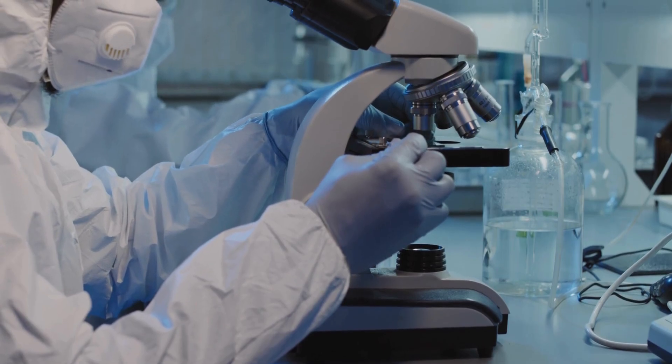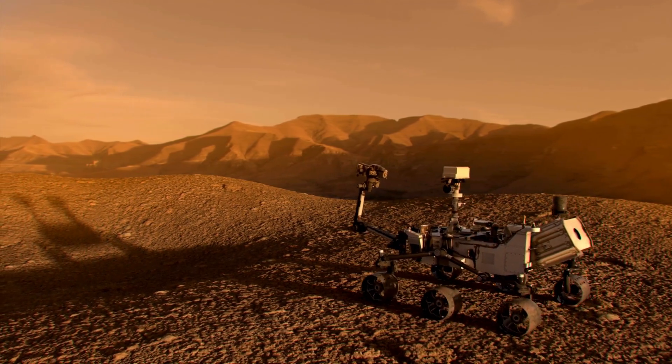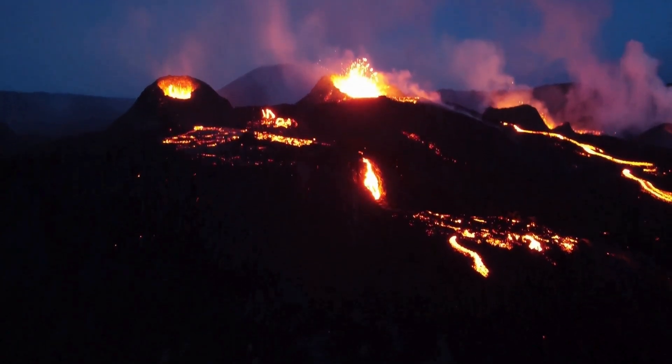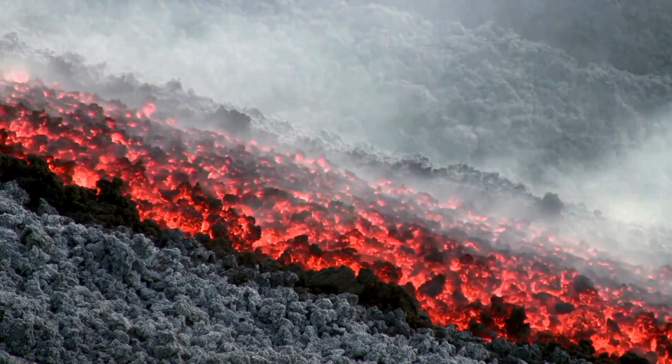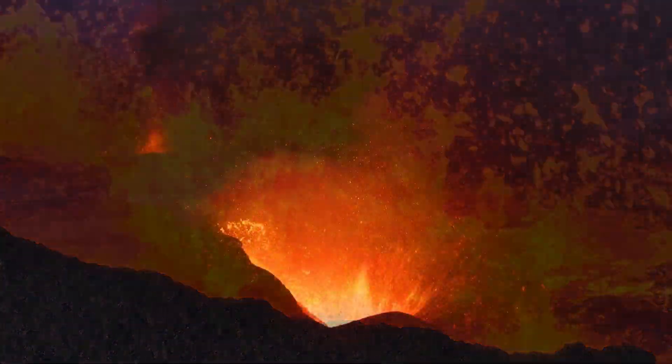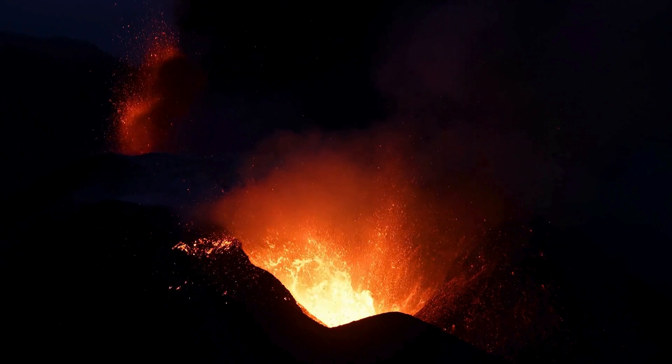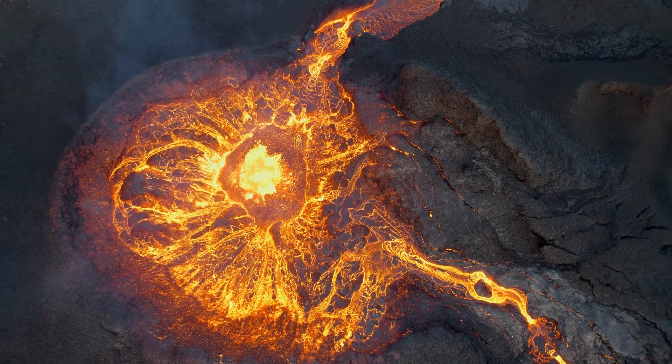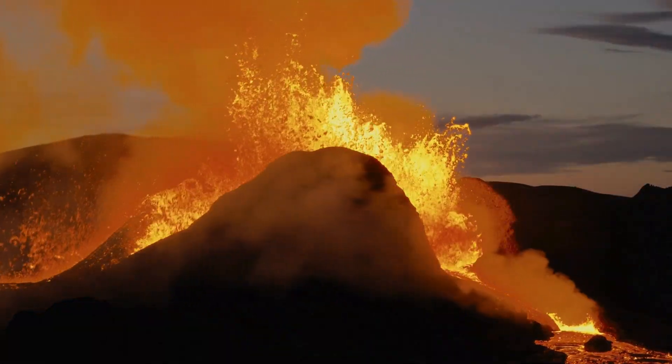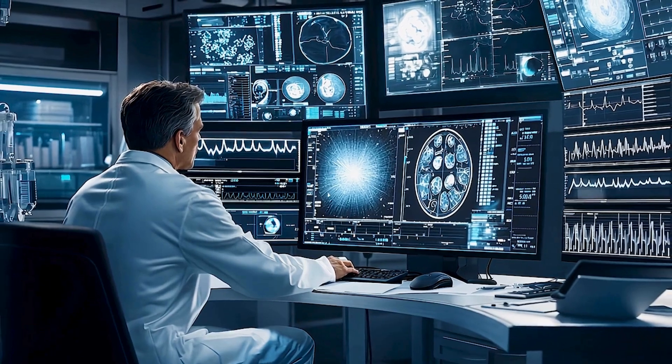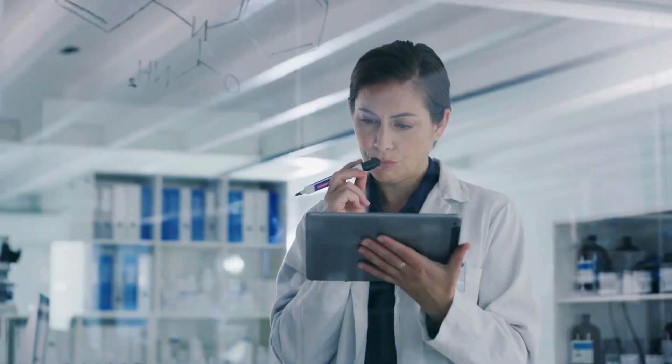In northern Tanzania, Oldoinyo Lengai erupts natrocarbonatite lava, a low-temperature flow rich in sodium and potassium carbonates. This lava carries rare earth elements like strontium, lanthanum, and neodymium, critical for high-efficiency electronics and renewable energy systems. In East Java, Indonesia, Kawah Ijen's glowing blue flames and acidic crater lake conceal vast sulfur deposits, harvested under extreme conditions for agriculture, medicine, and chemical industries. The volcano also yields selenium and arsenic, essential for metallurgy and electronics.